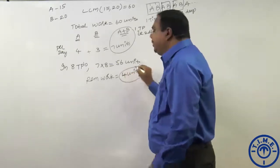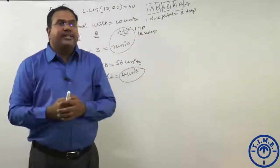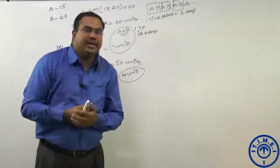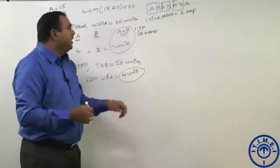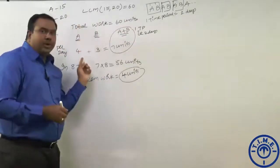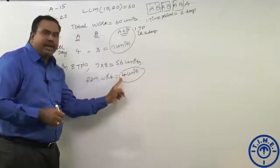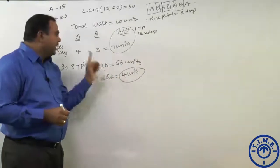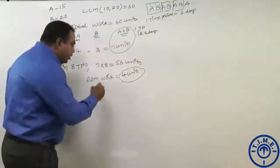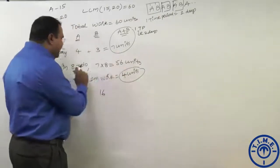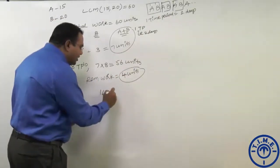After 8 time periods, the person who started — A — comes to work. In one day A does 4 units, and 4 units remain, so A completes it in 1 more day. Total work is completed in 8 time periods (16 days) plus 1 day = 17 days.